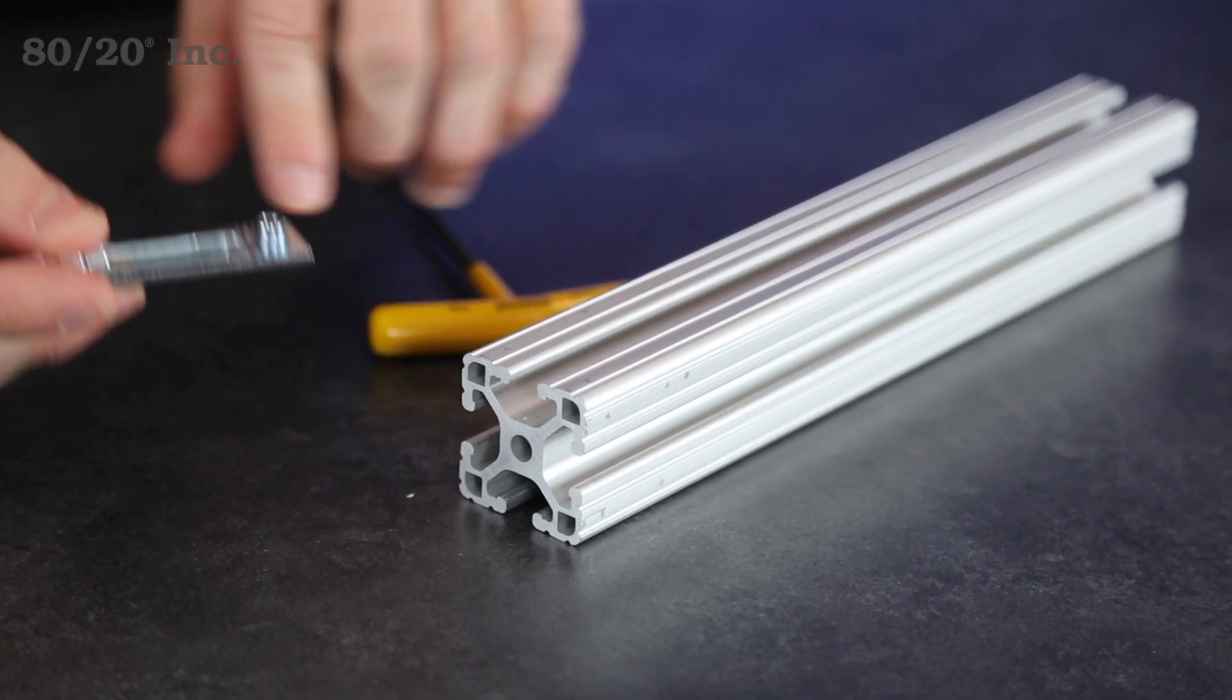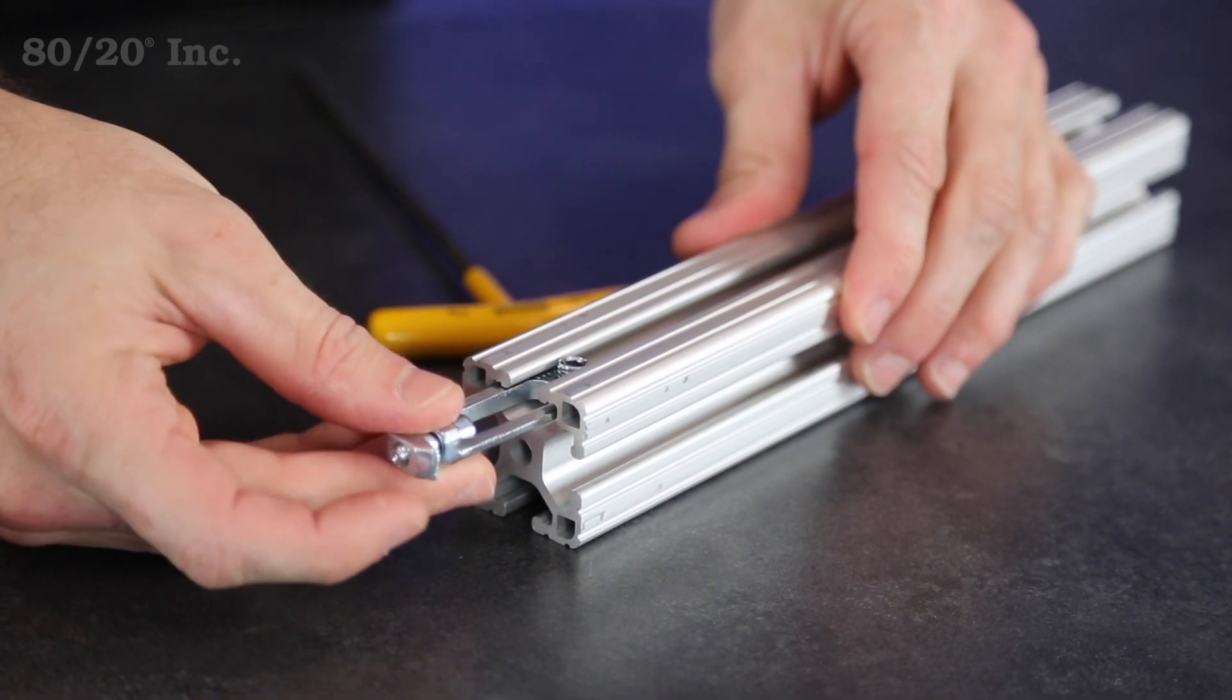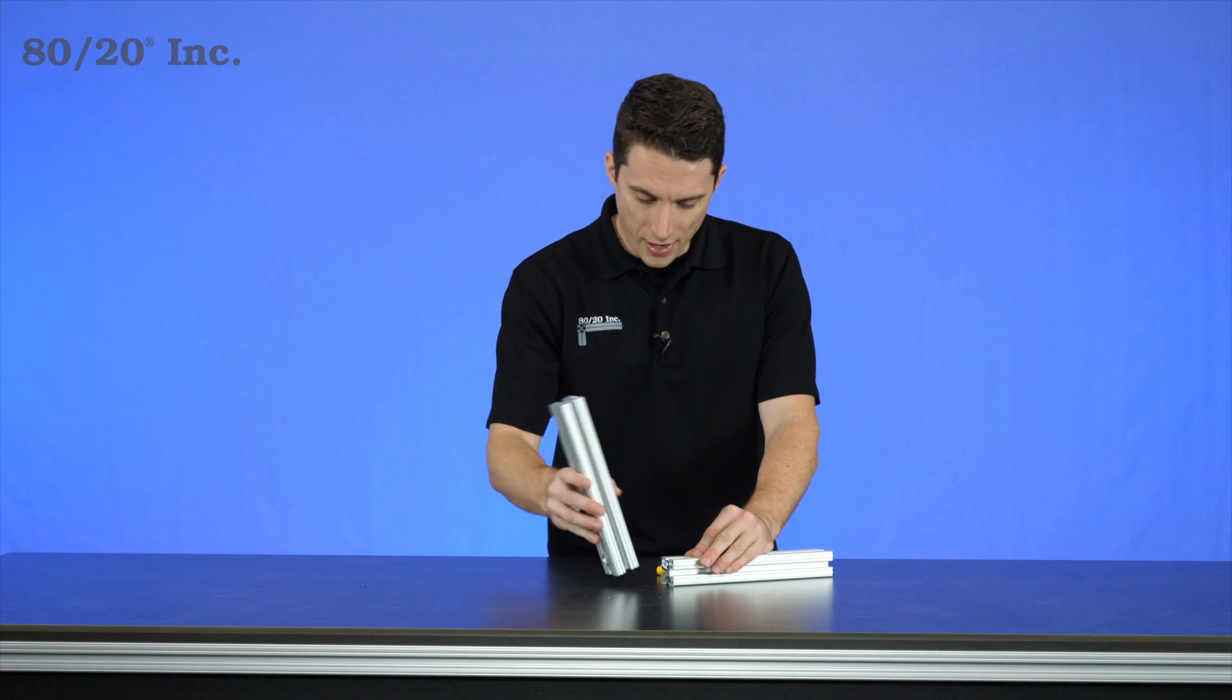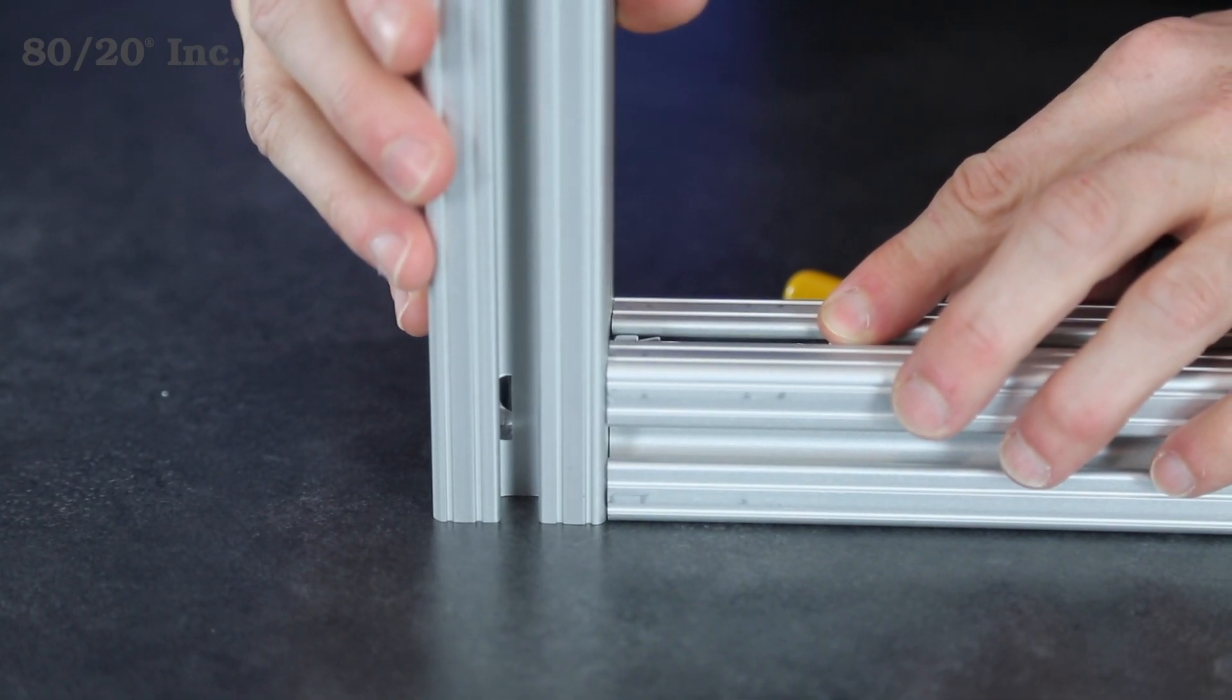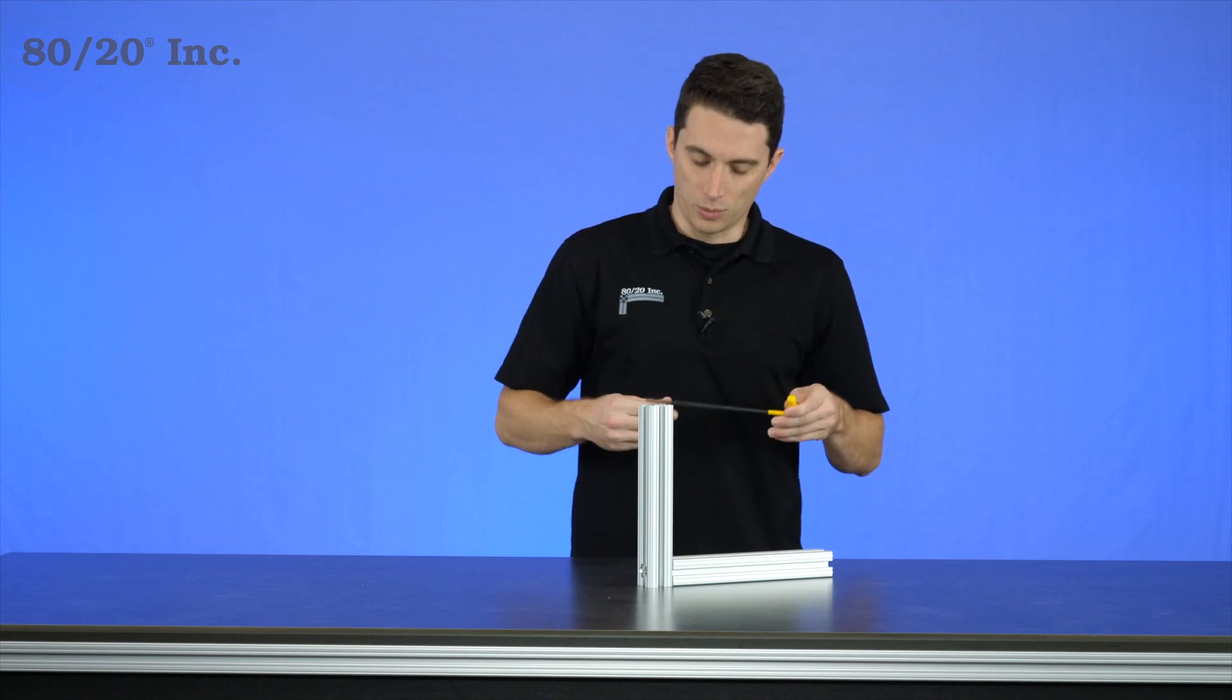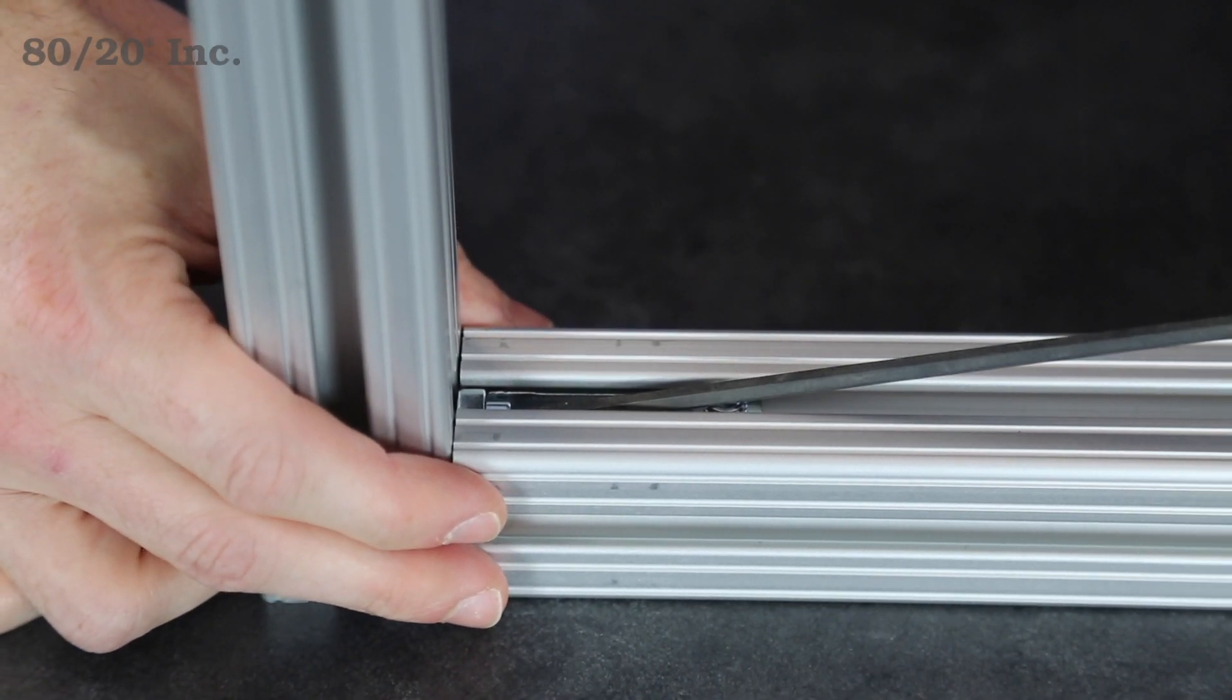So we'll take the end with the set screw, slide into the open T-slot, leave the T-nut out just a little bit, we'll take our other profile, we'll drop that T-nut right into the open T-slot. From there, we'll take our wrench and tighten down our bolts.